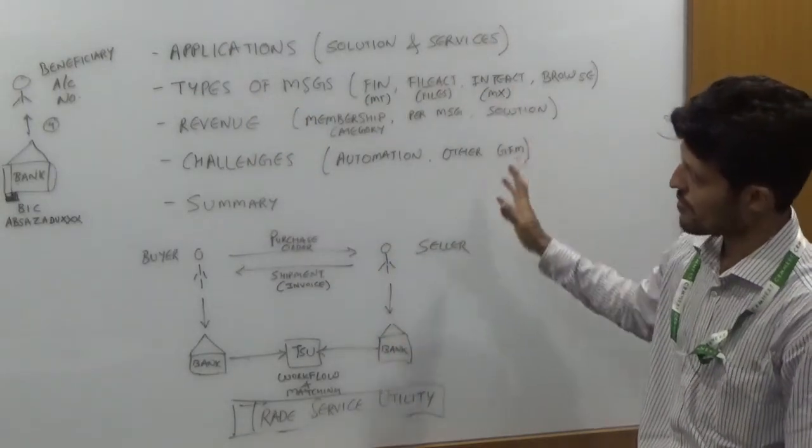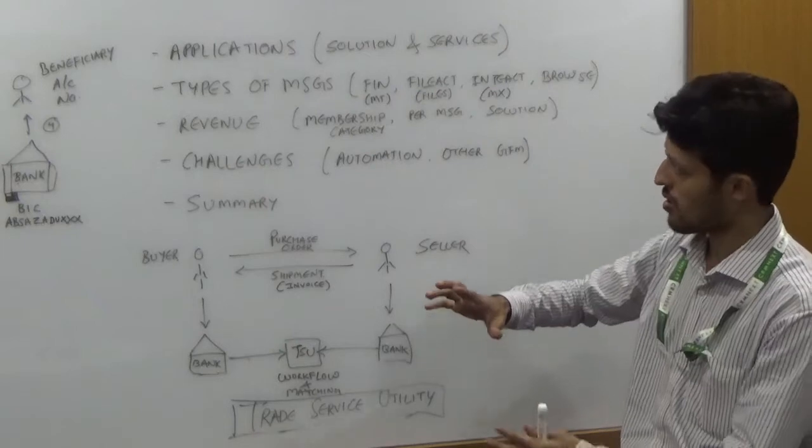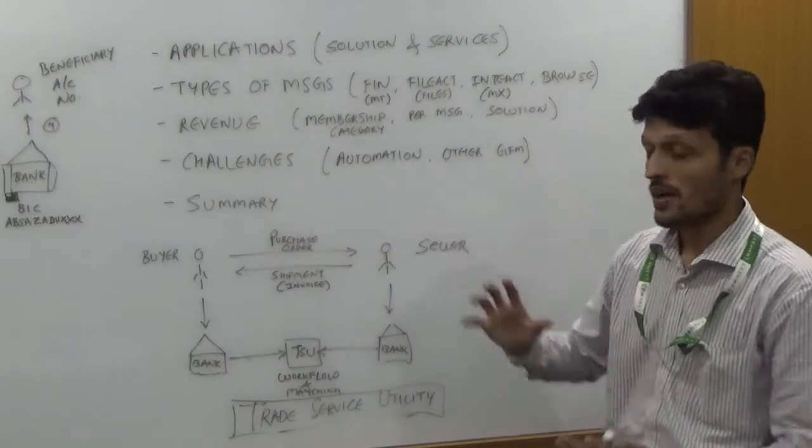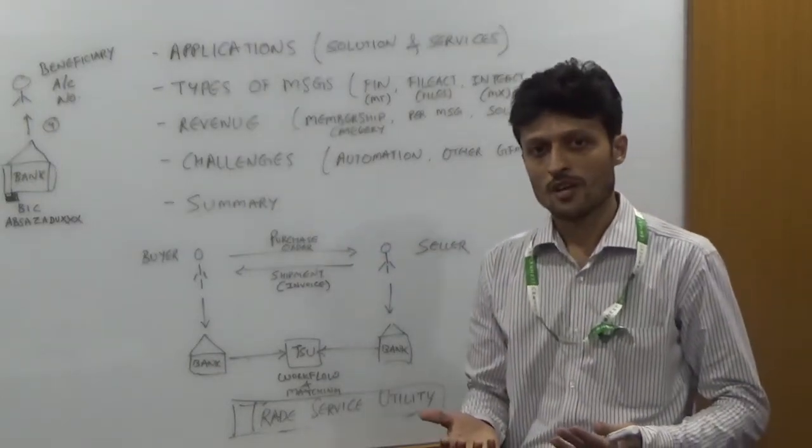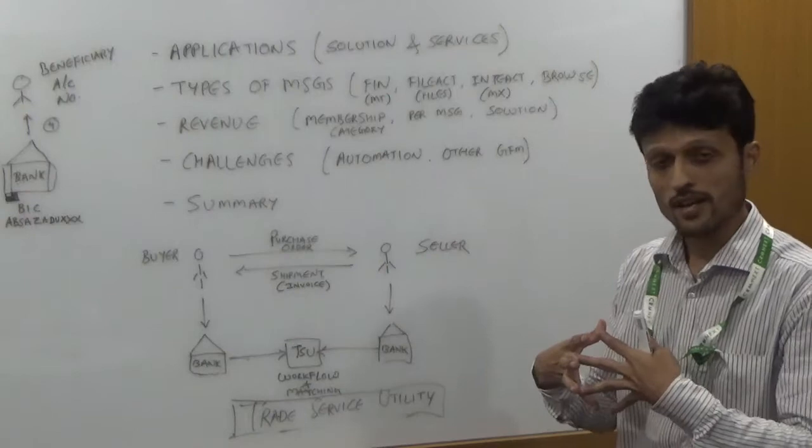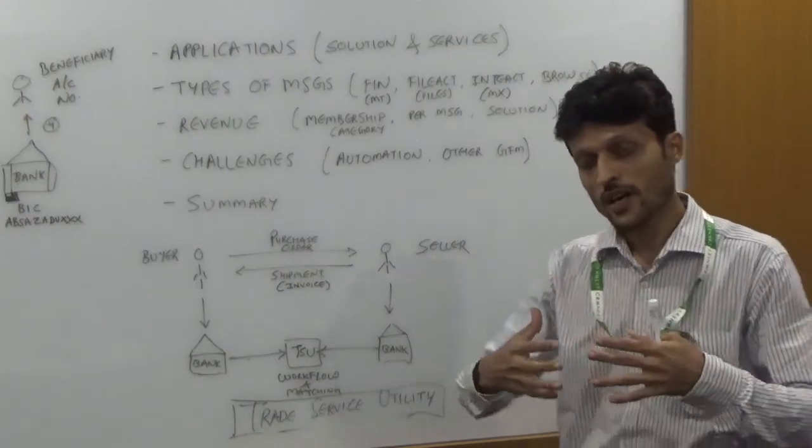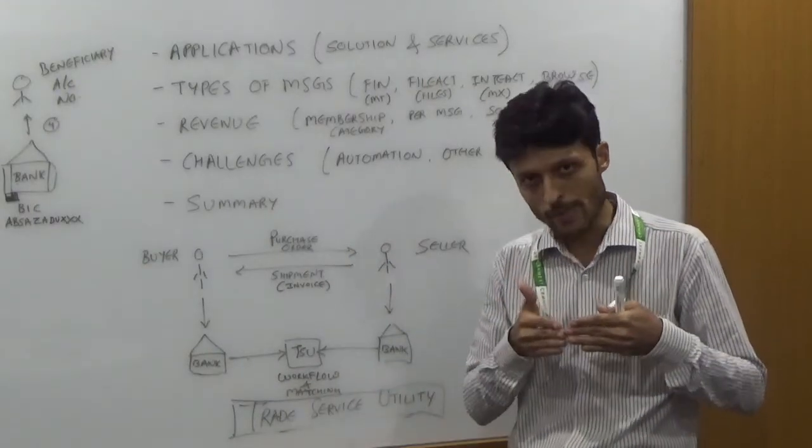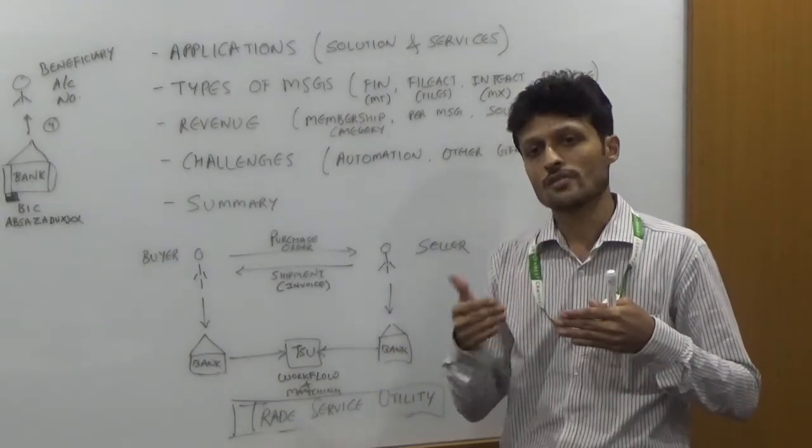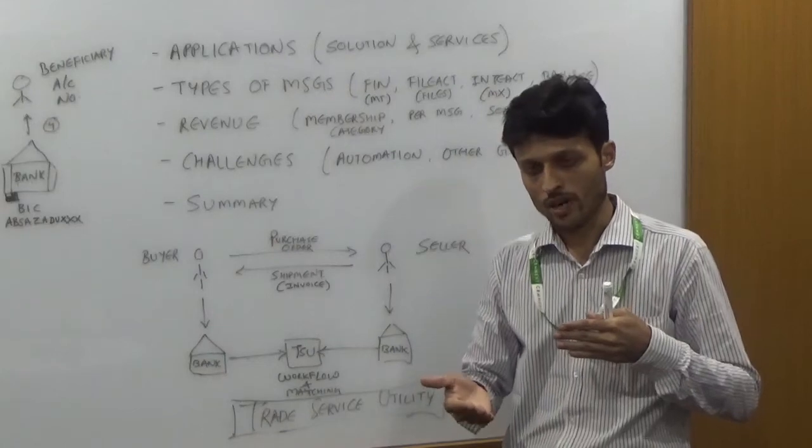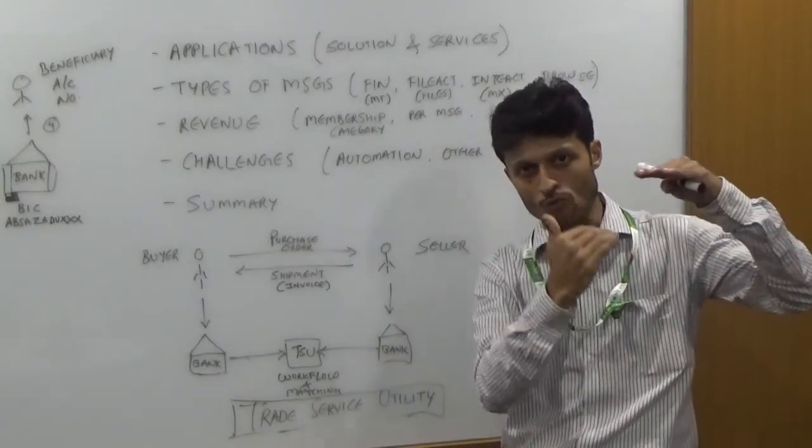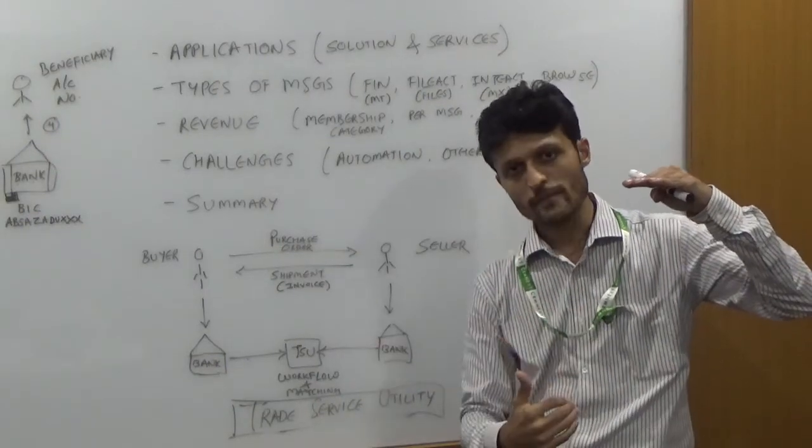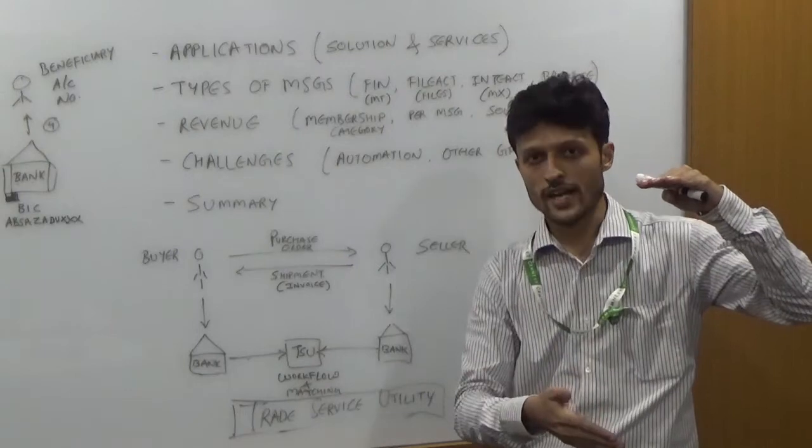Now this is all about how the SWIFT works, what all applications it provides, how the communication takes place between SWIFT, but how does it earn the revenue? Basically this is a Society of Interbank Financial Telecommunication where it has different membership with the financial institutions. When you try to get the membership in the SWIFT network, you have to pay an initial amount. Once you are a member, depending on your volume, number of data, kind of transactions, type of payment, you will be categorized into one of the categories.